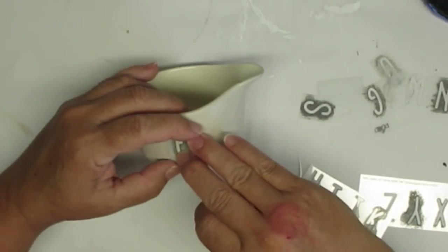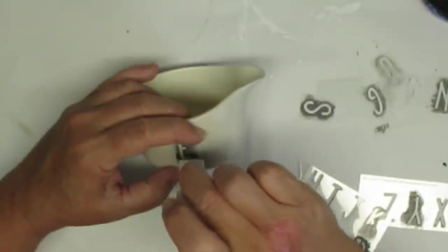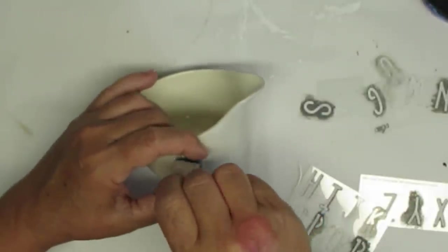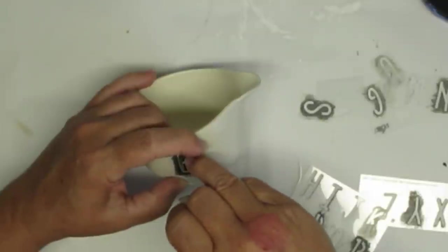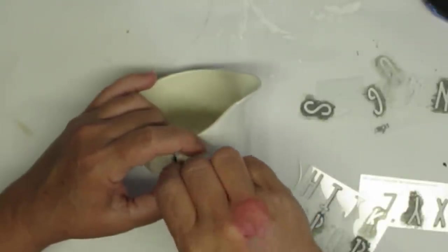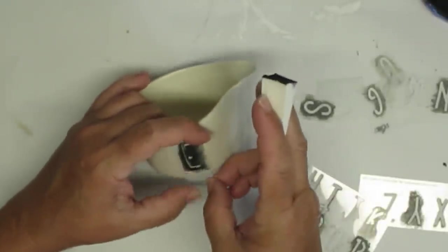I'm using some stencils that kind of look like Ray Dunn font some black paint and a makeup sponge to stencil these letters on. I don't want them to be really dark so I'm using a really light touch.